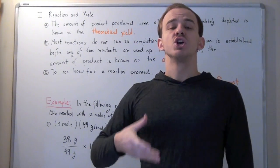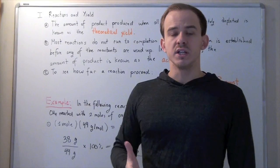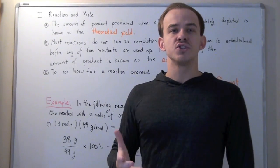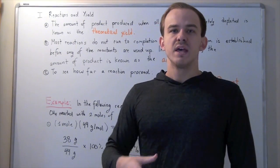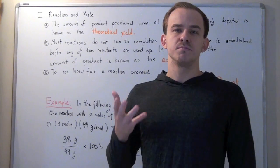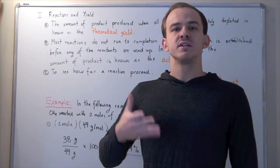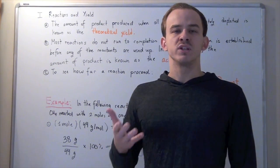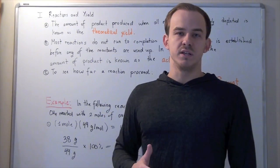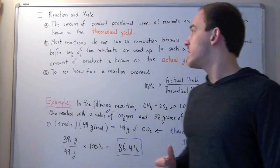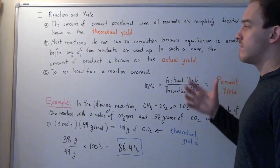Note that most reactions don't actually run to completion, and that's because our reactions usually reach equilibrium before any of the reactants are depleted. That means that theoretical yield will not be possible. We'll get a number below theoretical yield, and this number is known as the actual yield of our experiment.